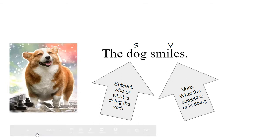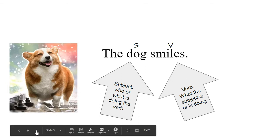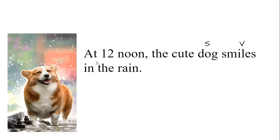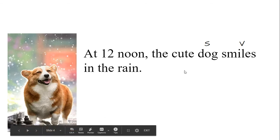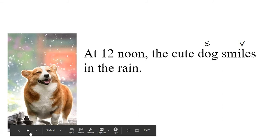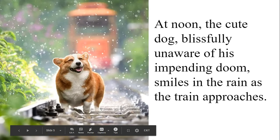At the core of any grammatically complete sentence, no matter how complex, we're going to have those two things. We can take our basic sentence and build it up — in this case, we've added the prepositional phrase 'at 12 noon,' which tells us when the smiling is happening; 'in the rain,' which tells us where; and the adjective 'cute,' which describes the dog. But at the core, we still have 'the dog smiles.'